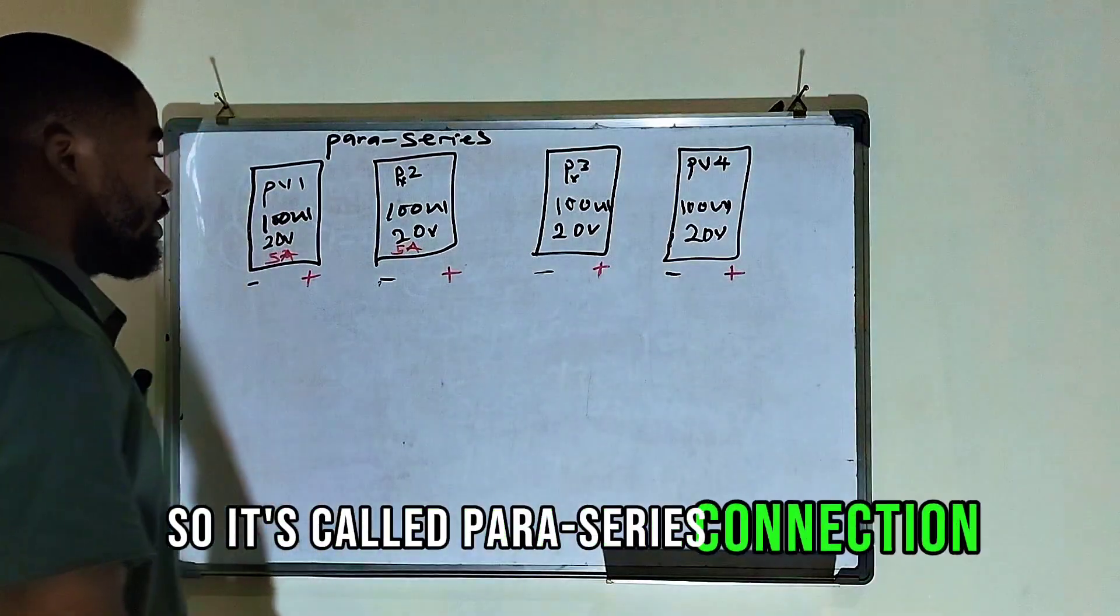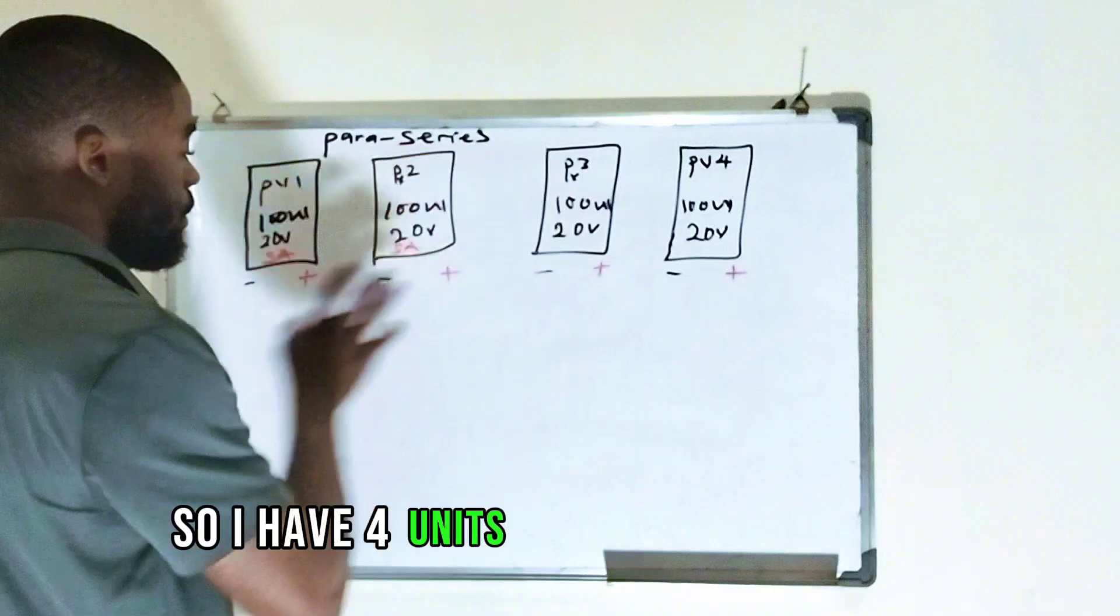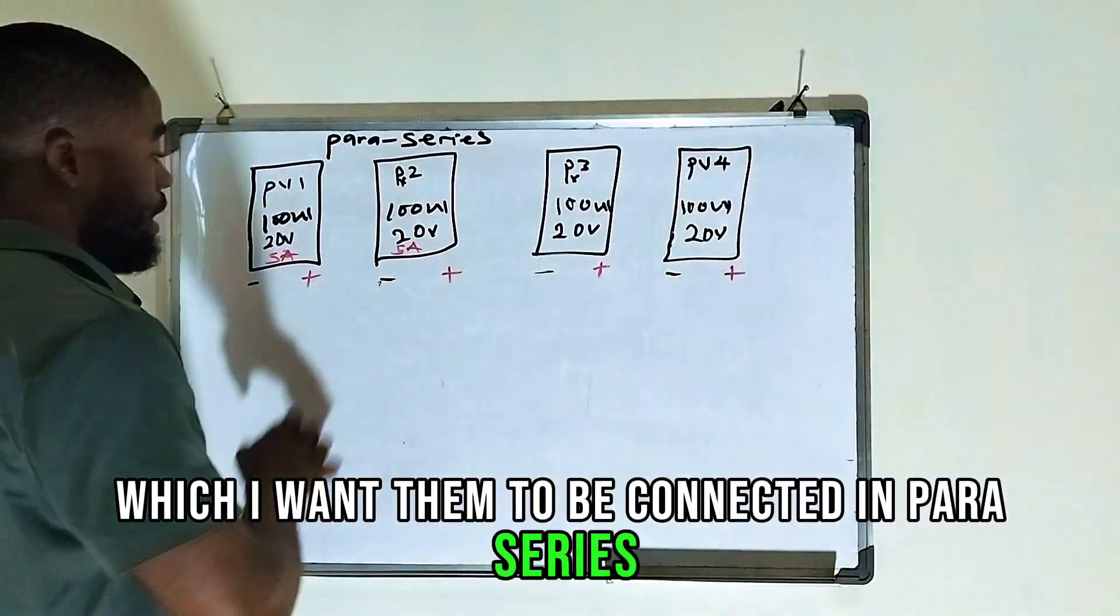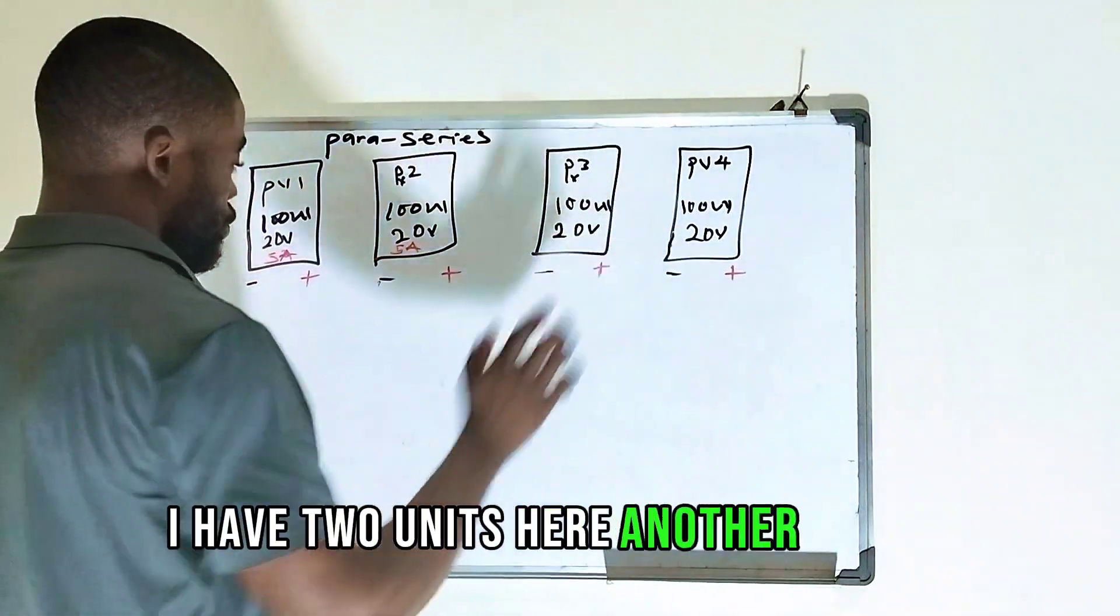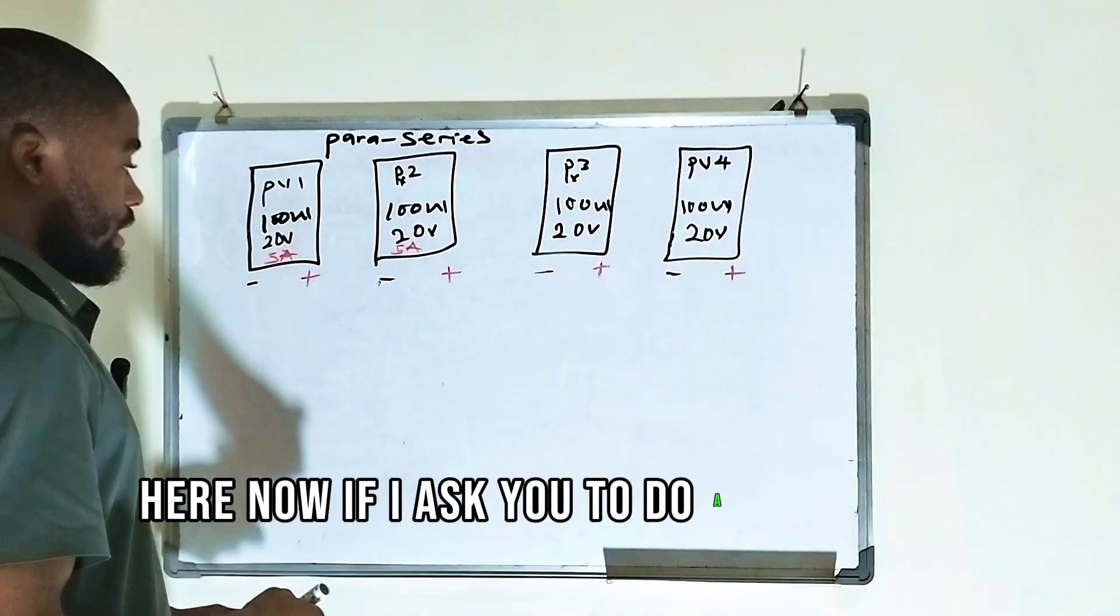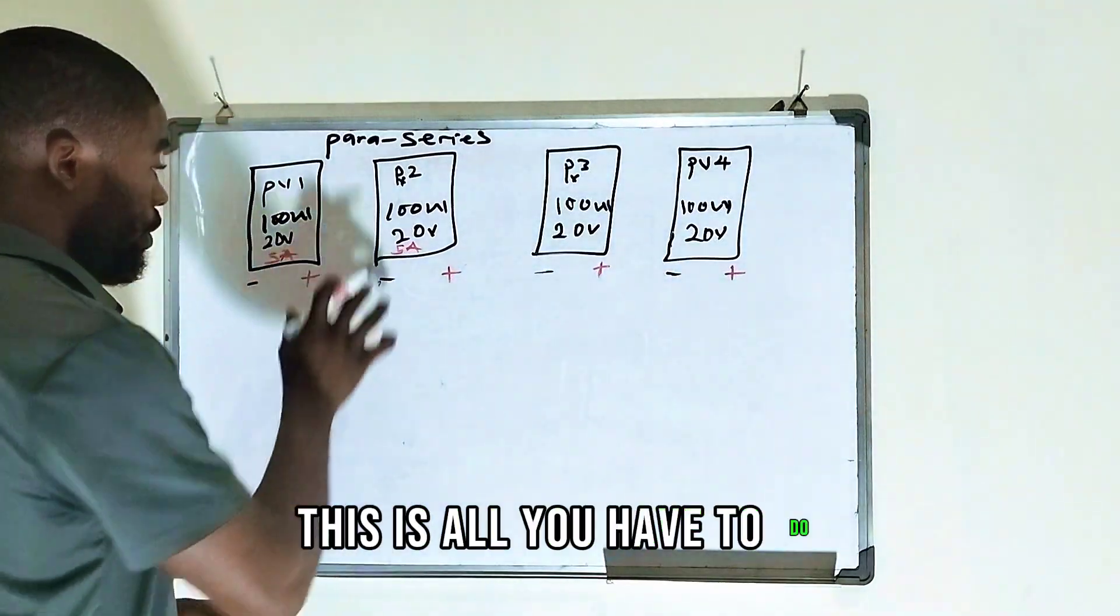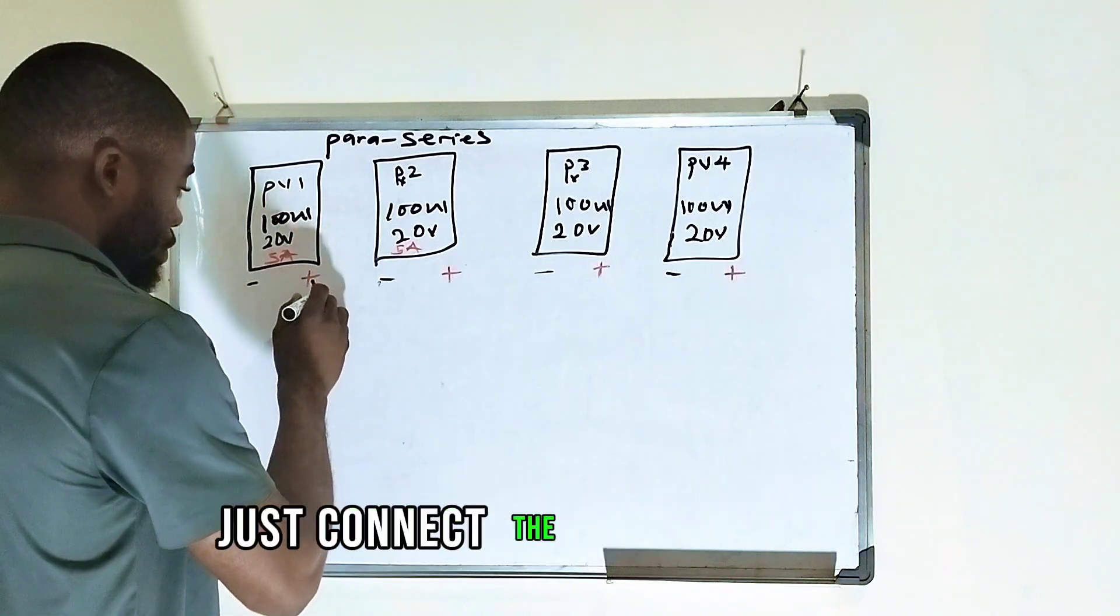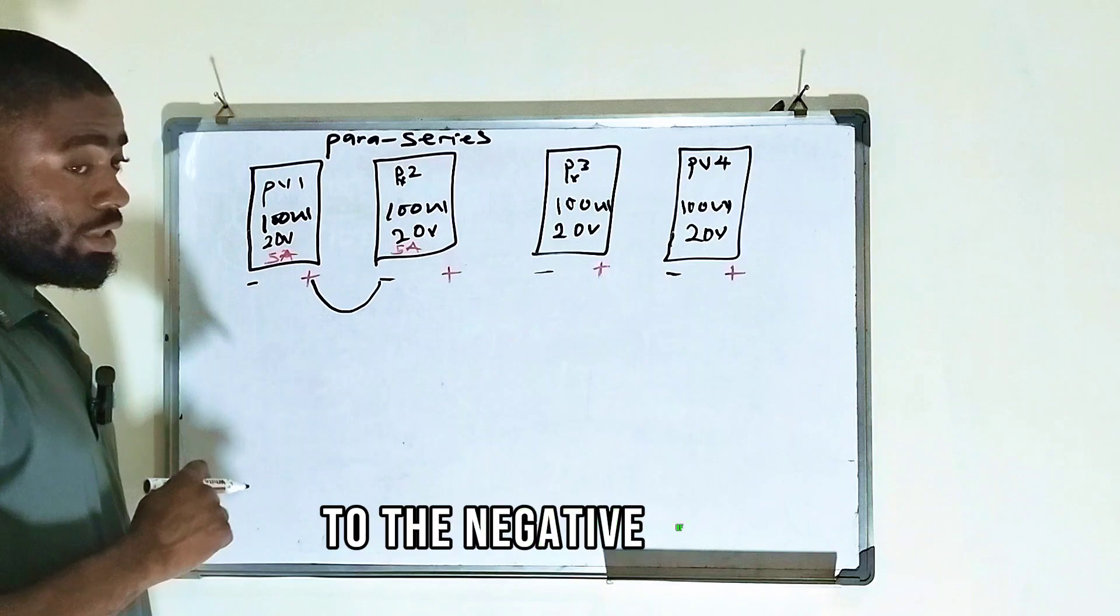So it's called Paraseries connection. I have four units of 100-watt panels which I want them to be connected in Paraseries. I have two units here, another two units here. Now, if I ask you to do a Paraseries connection, this is all you have to do. You have two units of 100-watt solar panels here. Just connect the positive of this to the negative of this.